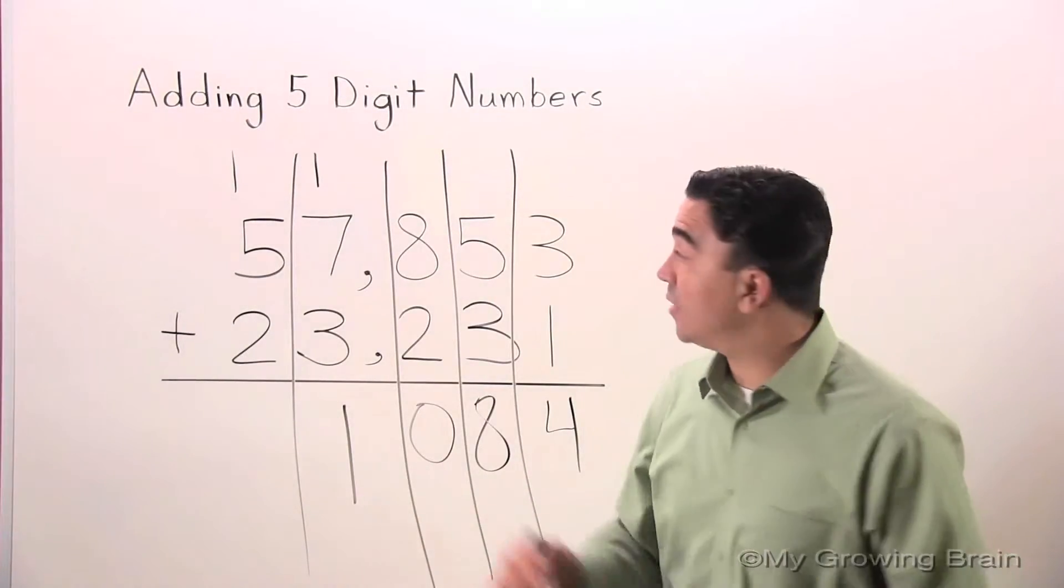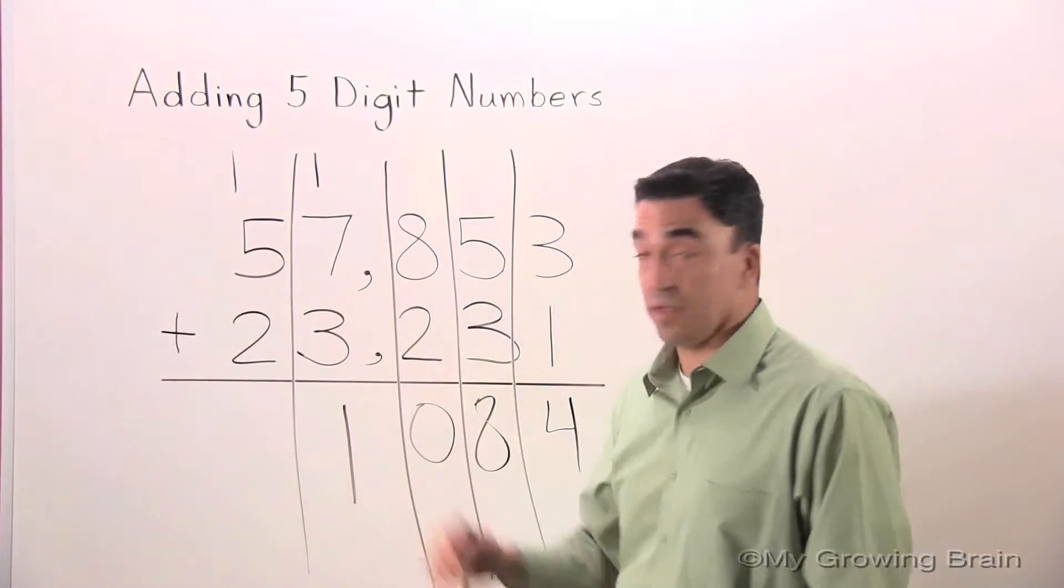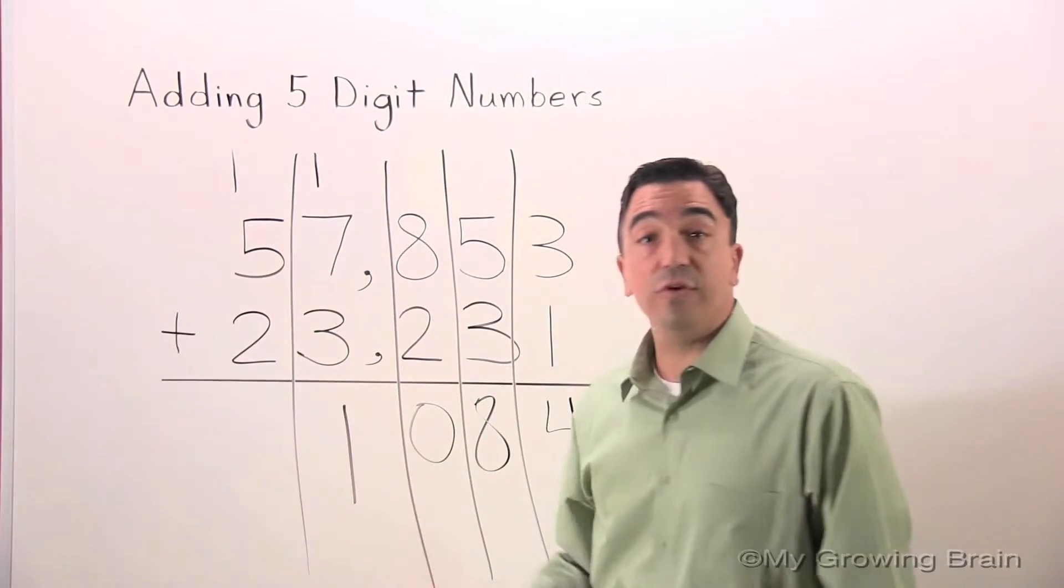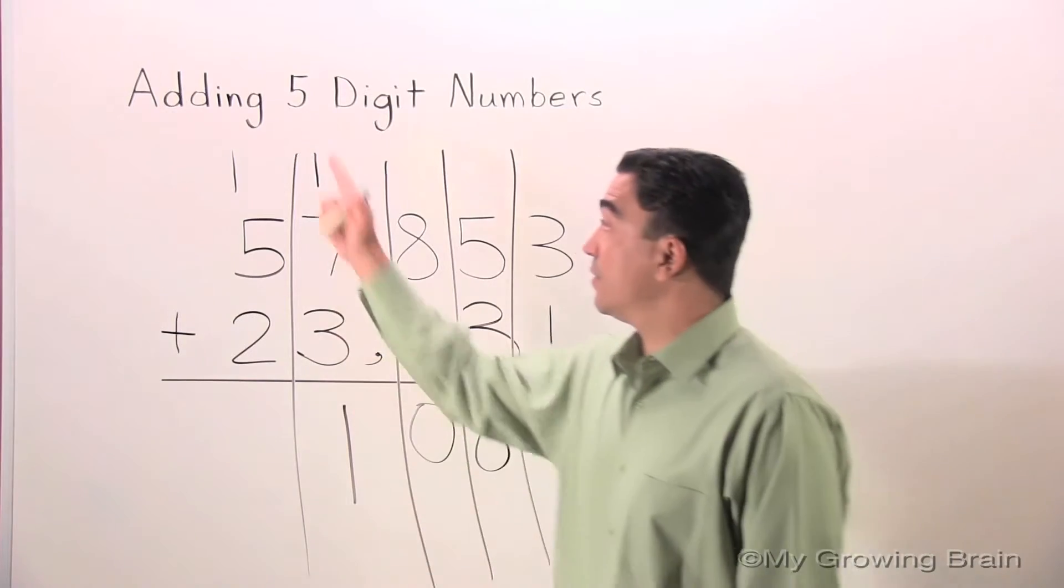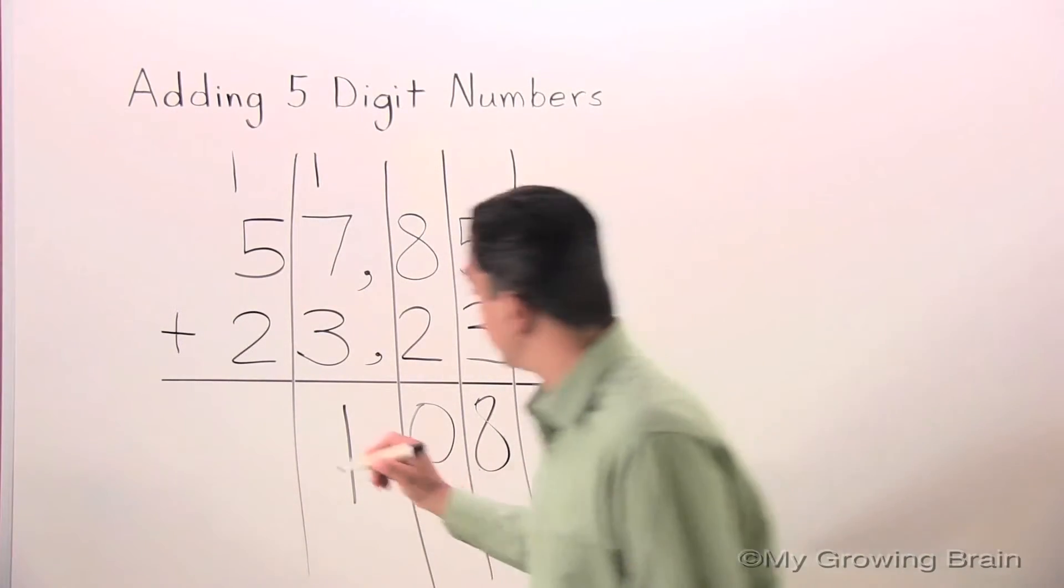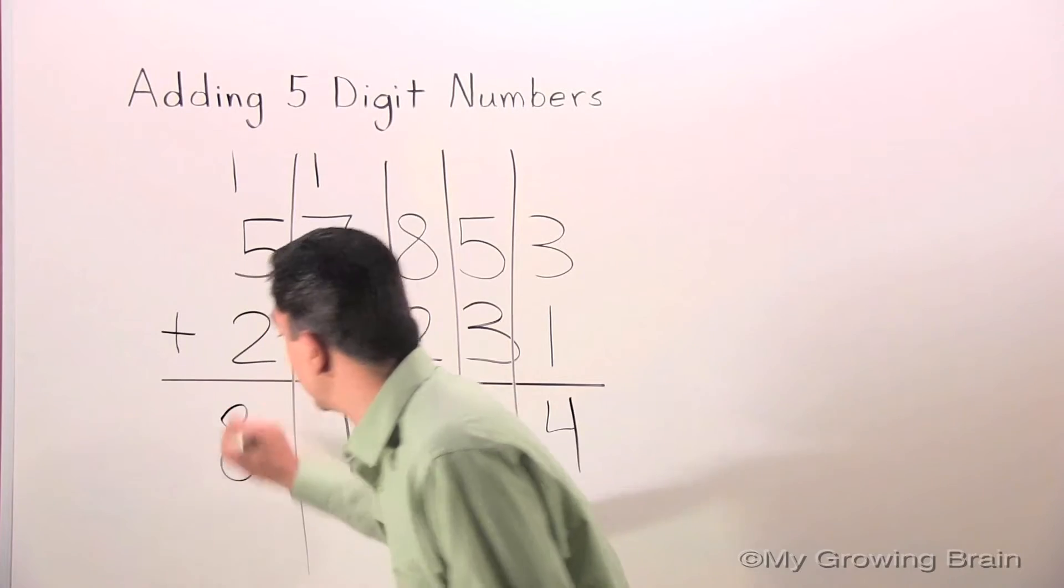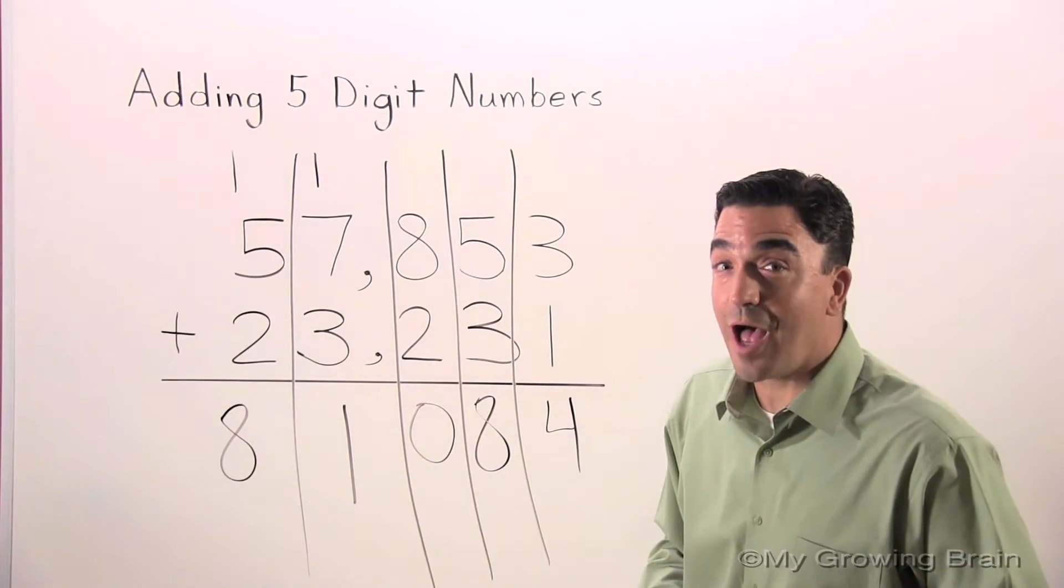I once again will add the three digits. Five plus two is seven. Seven plus one is eight. Don't forget your comma.